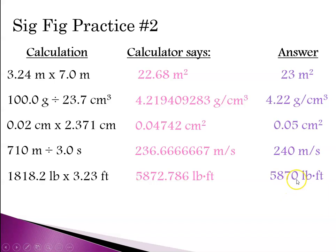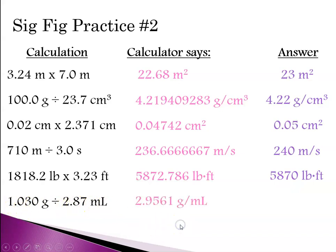Notice you don't want to lose the magnitude of the number, but you want to report the correct number of significant digits. For 1.030 divided by 2.87, the calculator gives 5 digits. We should only report 3 significant figures. The third significant digit is the 5, so the answer is 2.96.